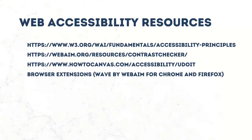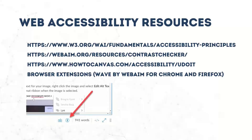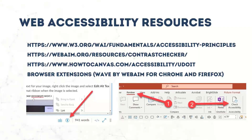You can also search for browser extensions — Wave is one of the most reputable, made by WebAIM at Utah State University, with plug-ins for Chrome and Firefox. Also, when developing in Canvas, any time you edit a page you'll notice an accessibility icon at the bottom of the content area that runs an accessibility checker — it checks for sections, headings, alt text, and sufficient contrast. If you're working in any Microsoft platform — Word, Excel, or especially PowerPoint — check out their accessibility checkers as well. In PowerPoint, it's under the Review tab, far to the right, where you'll find Check Accessibility.